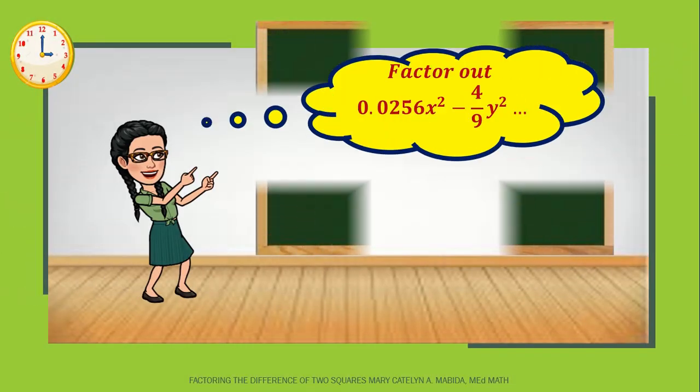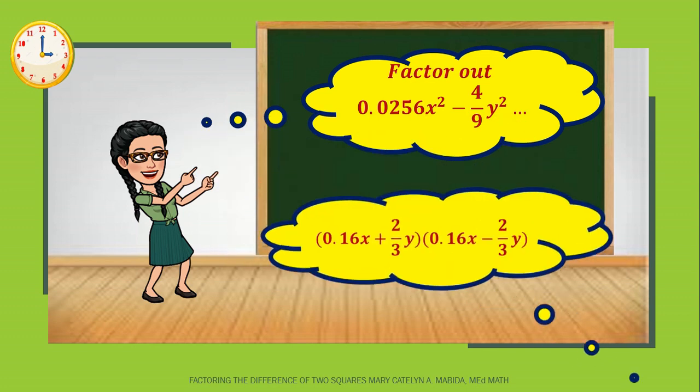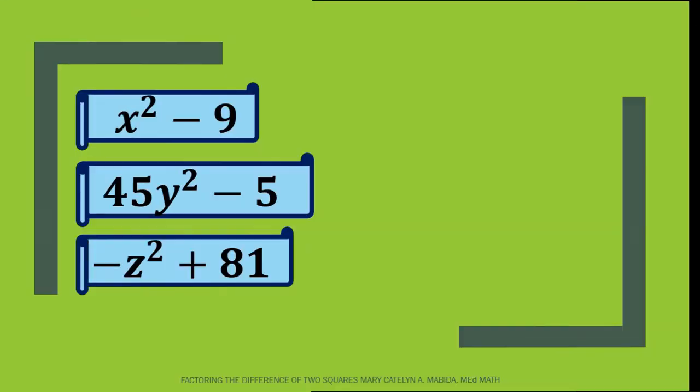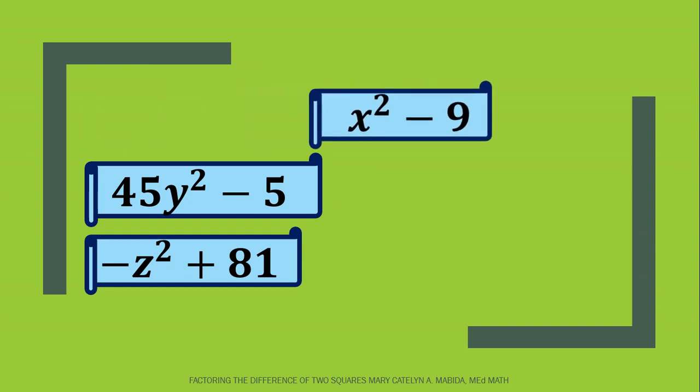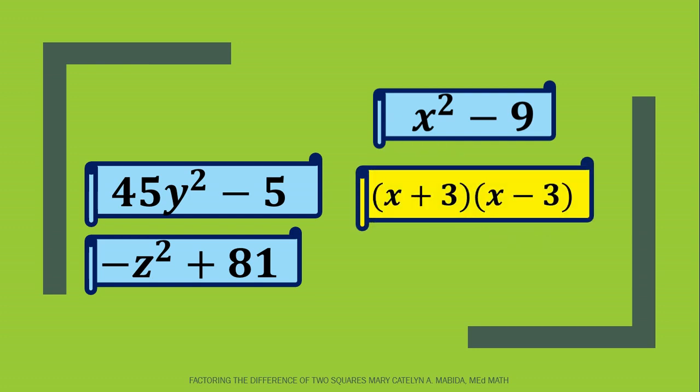Now it's your turn to factor. Factor out 256 ten-thousandths x squared minus 4 ninths y squared. That's amazing! Let's factor out the difference of two squares. Now you can pause the video to solve for the answer. Number 1: x squared minus 9. Again, pause the video to solve for the answer. And the answer is the sum and difference of x and 3. Good job!